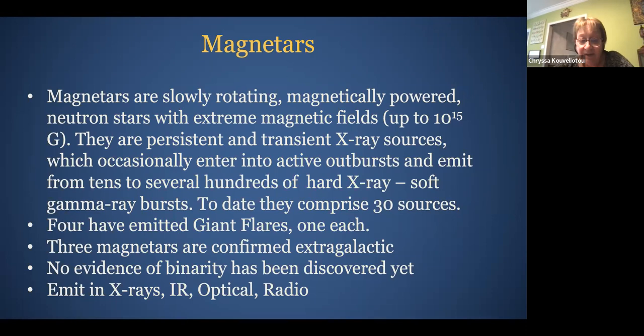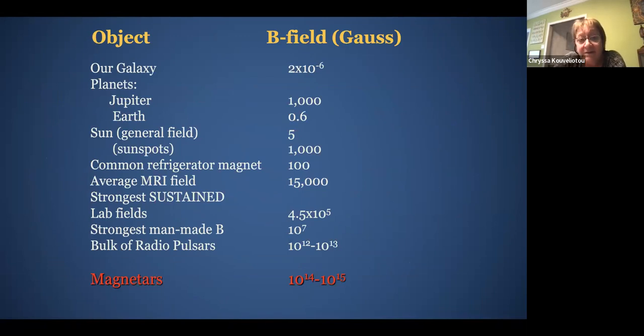And three of these magnetars are confirmed extragalactic. There is no evidence of binarity. We have looked, and in fact, at the beginning of the magnetar story, there were a lot of arguments discussing whether the actual emissions are due to accretion disks from a binary companion. We have not been able to identify binarity in these sources, and we're still trying. So they emit in X-rays, in infrared, in optical, and in radio. And here, I have a comparison of different B-fields to give you an idea of the scale of magnetic fields in magnetars compared to other objects.